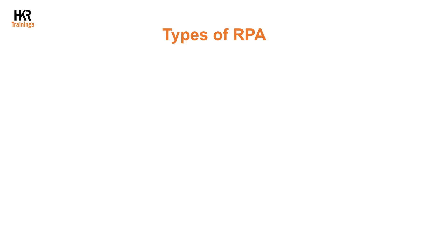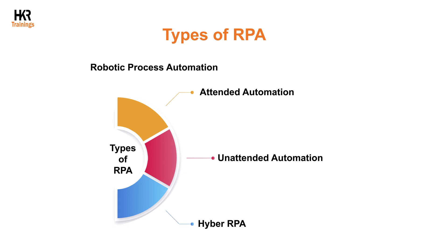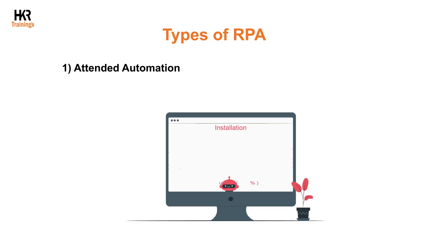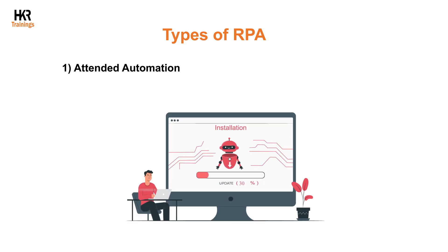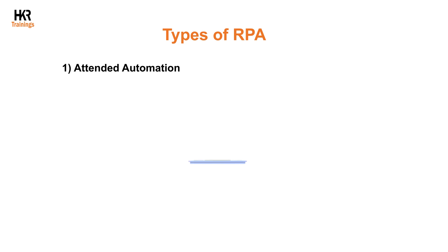Robotic Process Automation is classified into three types: attended automation, unattended automation, and hybrid RPA. First, attended automation — this kind of bot is installed on the user's PC and is typically activated by the user. Attended automation is ideally suitable for jobs that are initiated at moments that are difficult to identify programmatically.